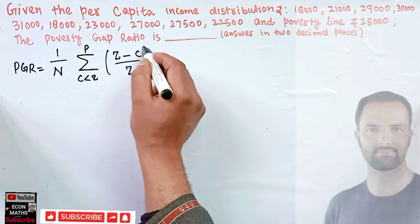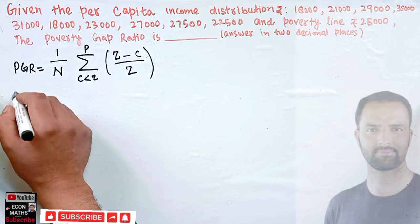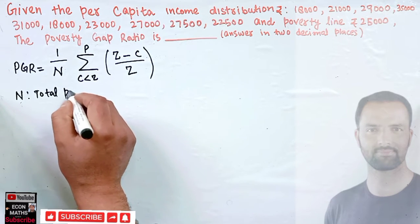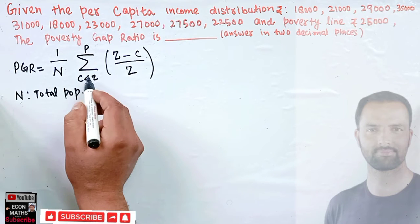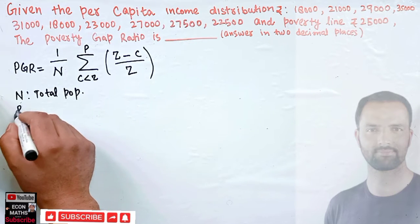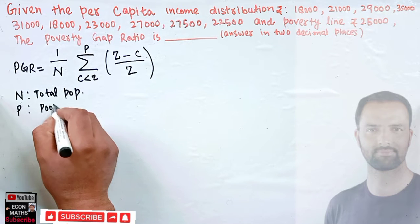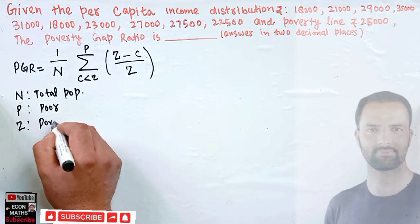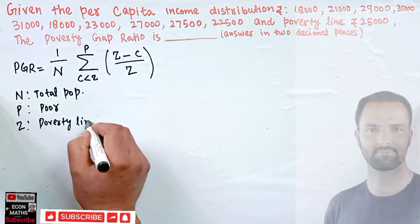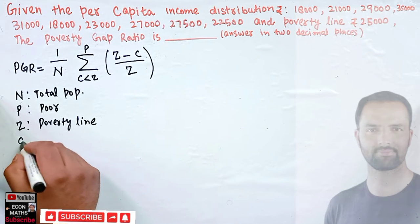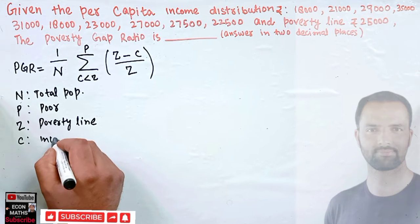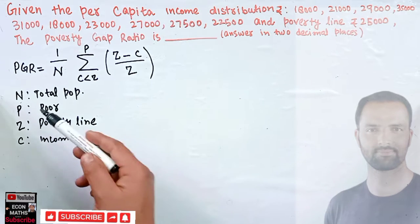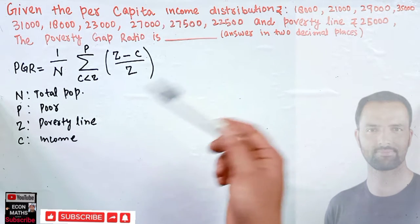In the formula, n denotes the total population, p denotes the number of poor, z is the poverty line, and c denotes the income of individuals.